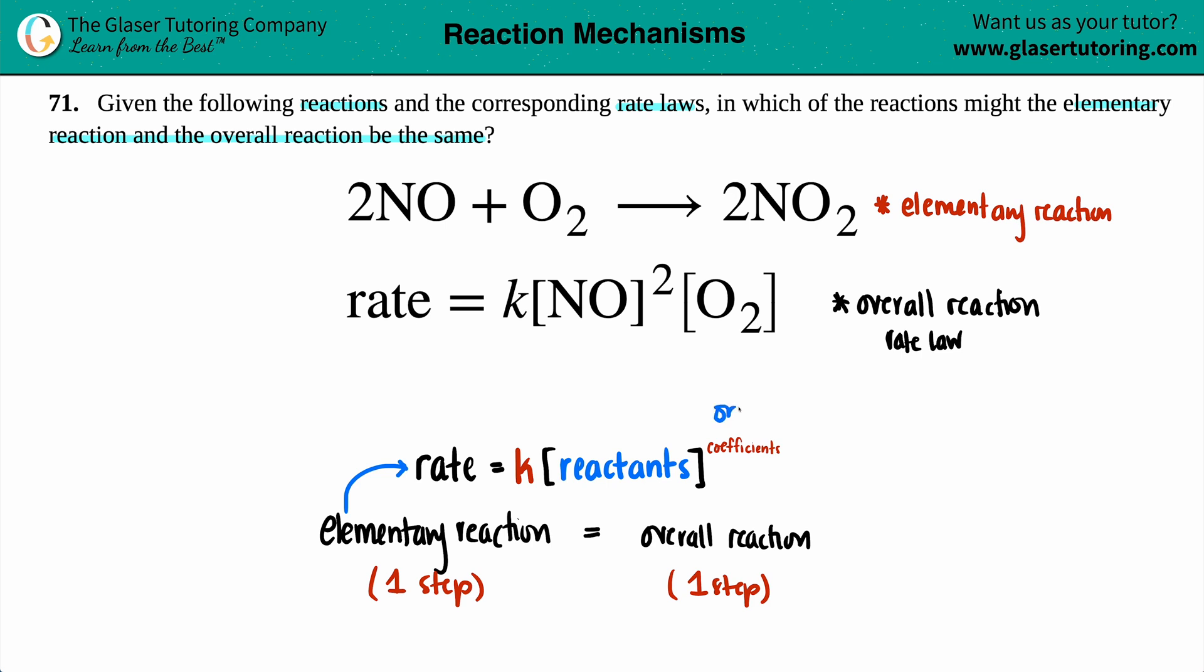Usually, if it's an overall reaction, it's going to be raised to the orders. And we can't take those coefficients because we don't know how many steps there are. But in this case, if we're saying that the elementary is the overall, I know that this rate law has to go with that equation. And it has to go so perfectly that it has to be raised to the coefficient.